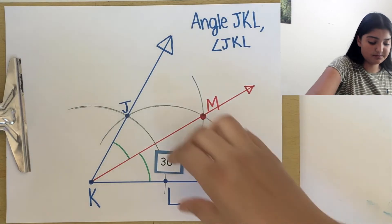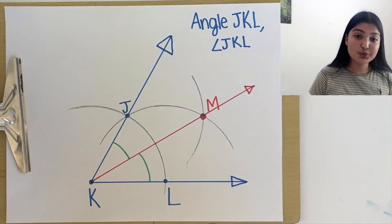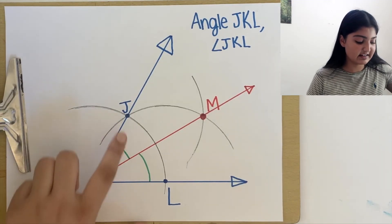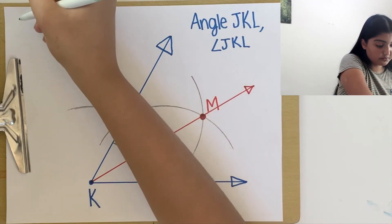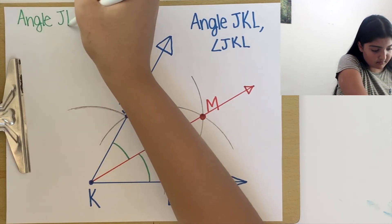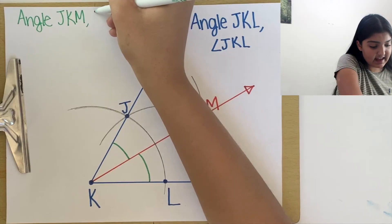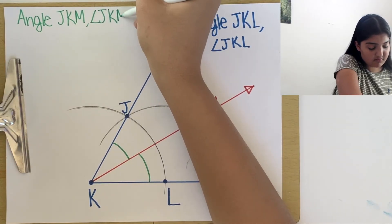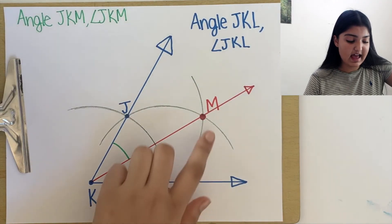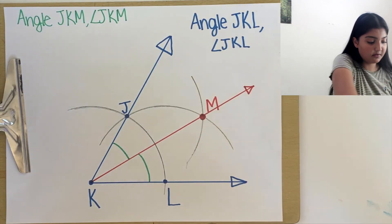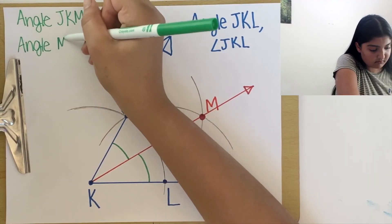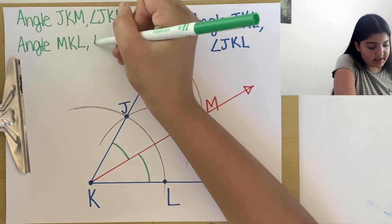Let's label these angles. We can write this angle as angle J, K, M, or by using the angle symbol. We can write this angle as angle M, K, L, or by using the symbol.